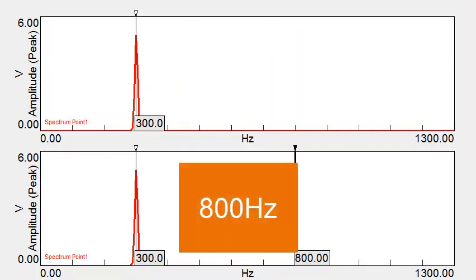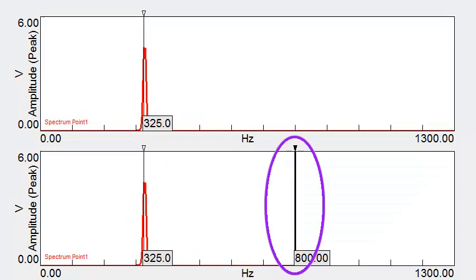On the other hand, the bottom graph has a bandwidth of 800 Hertz. The black cursor line represents this bandwidth.